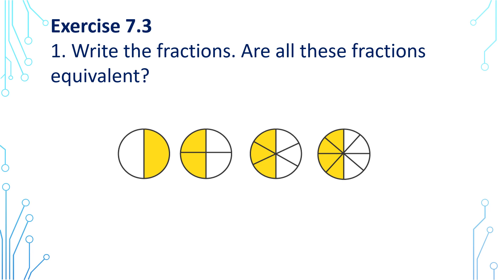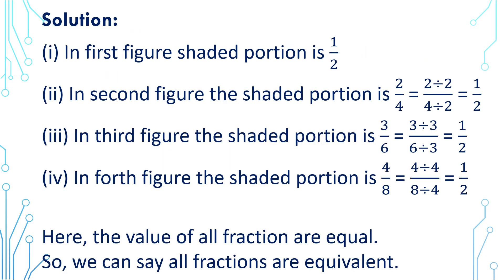Now let us solve exercise 7.3: Write the fractions. Are all these fractions equivalent? Observe the figure carefully. In the 1st figure, the shaded portion is 1 by 2. In the 2nd figure, the shaded portion is 2 by 4 and its simplest form is 1 by 2. In the 3rd figure, the shaded portion is 3 by 6 and its simplest form is 1 by 2. In the 4th figure, the shaded portion is 4 by 8 and its simplest form is 1 by 2.